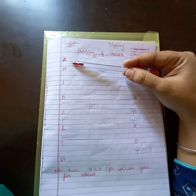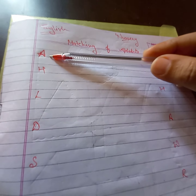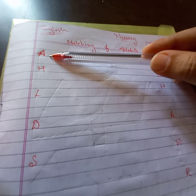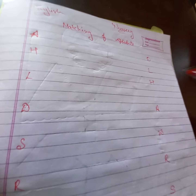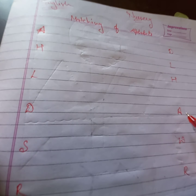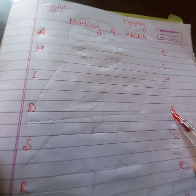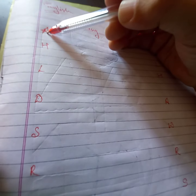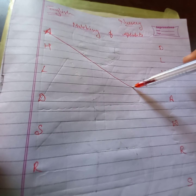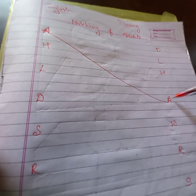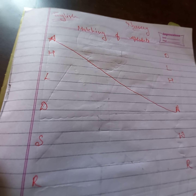Subse pehle hai A. What is this? A — A for apple. Aapne dekhna hai, is side peh A kaha hai, is side peh A raha ye, thik hai? Isko match karenge isse — star — yaha se line draw karenge, and that's it, okay? This is A.